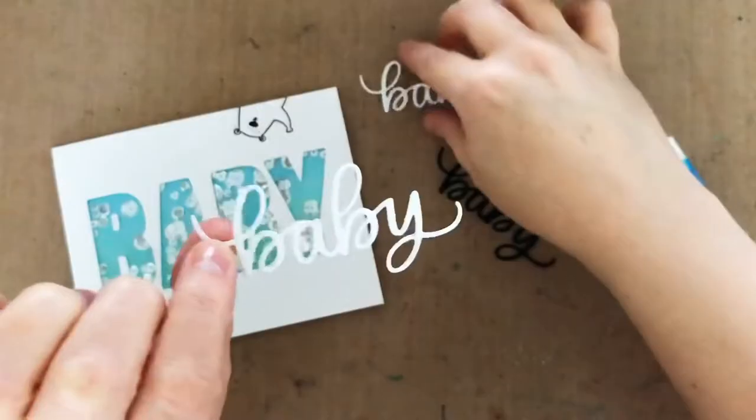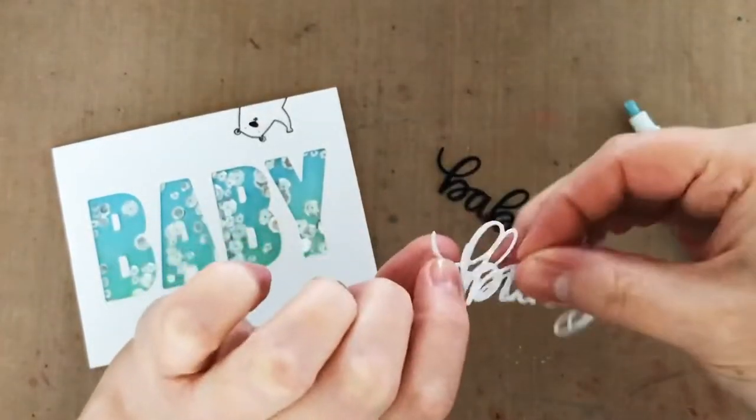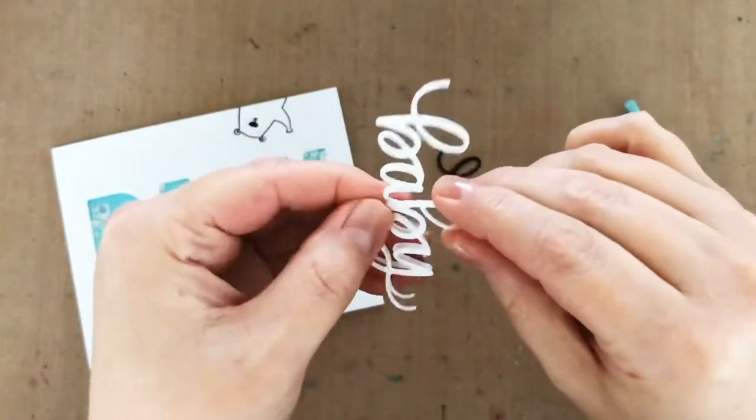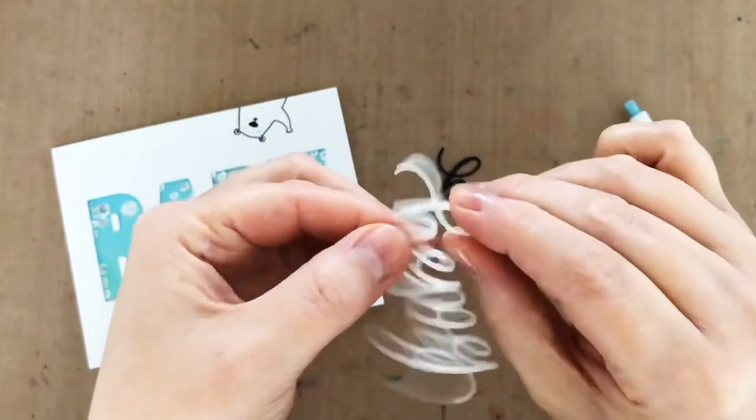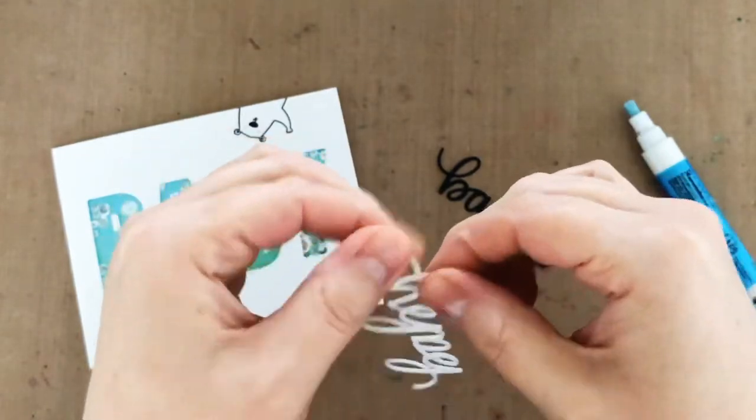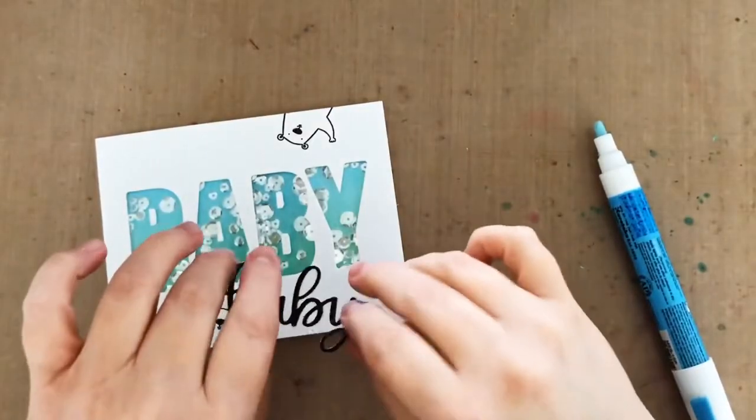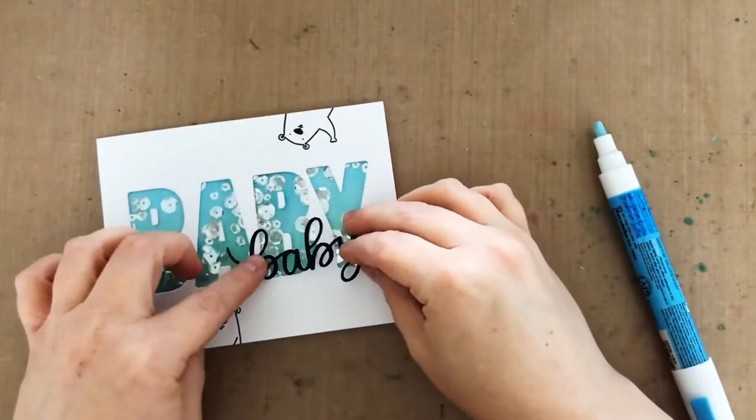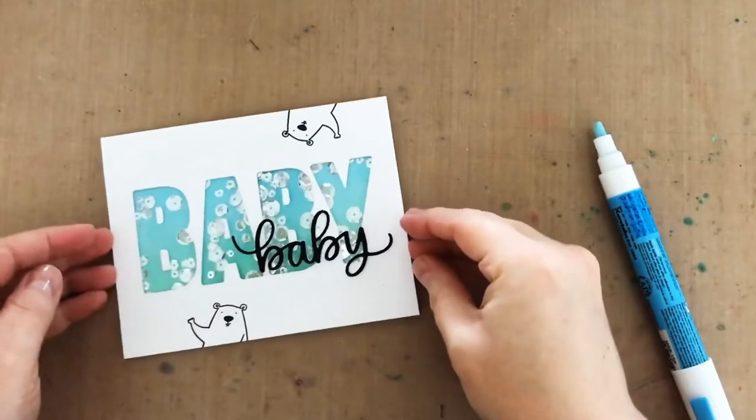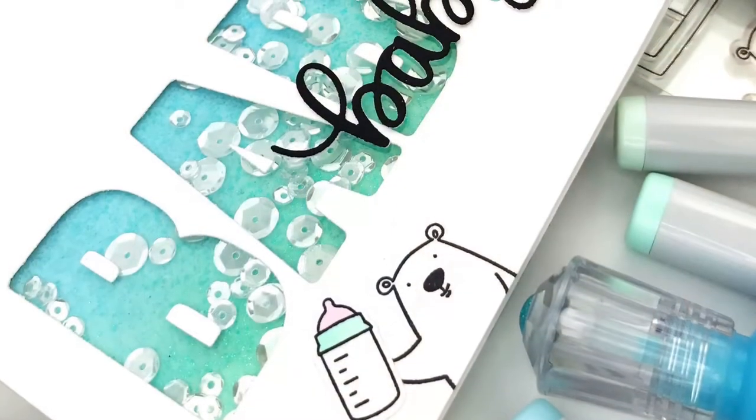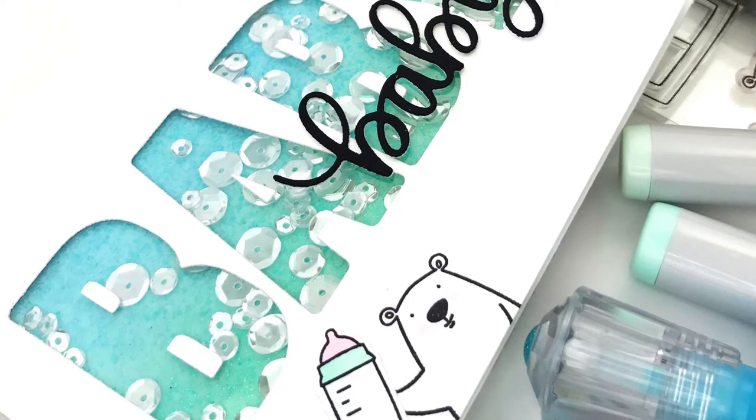For the second baby word, I've die cut the baby script three times, two in white and one in black and I'm layering them together with a glue pen. I like that the glue pen gives this a little bit of wiggle room as well so you can make sure you've got everything lined up perfectly and stacked up straight. Then I'm just going to adhere that on top of my shaker window and add a few baby bottles and this card will be finished.